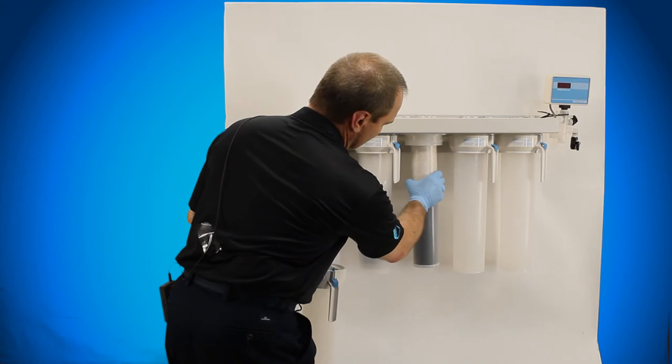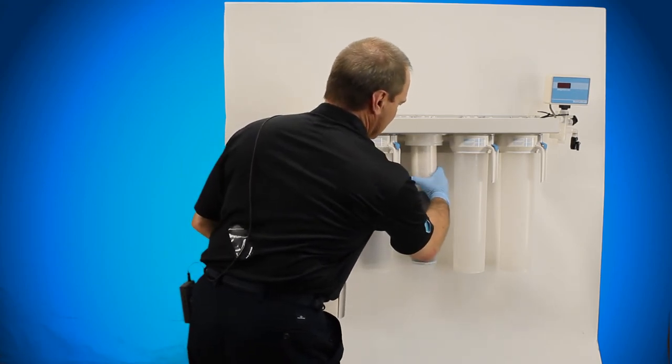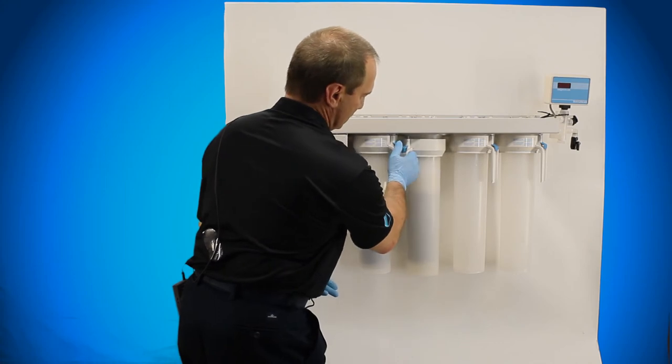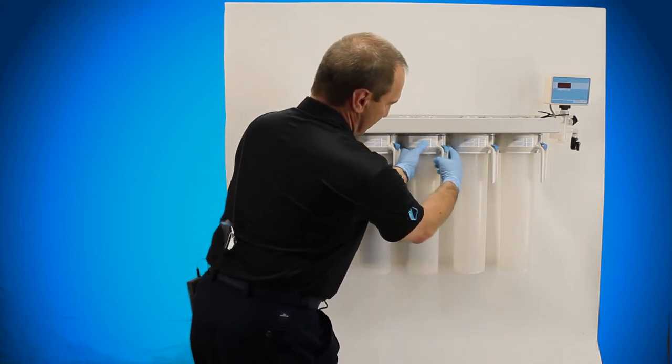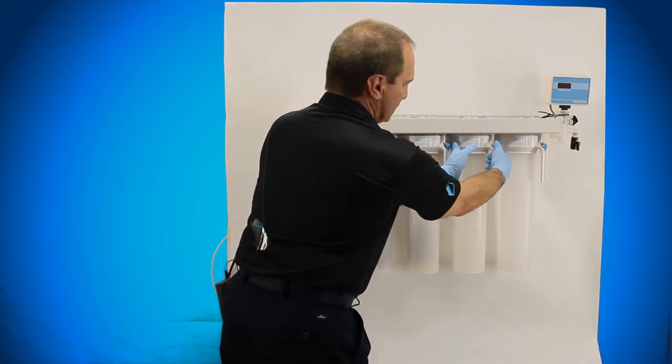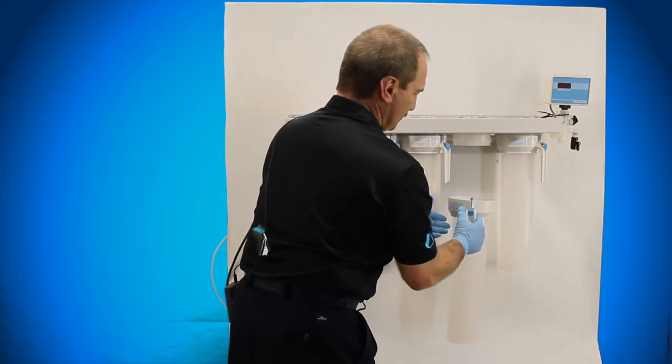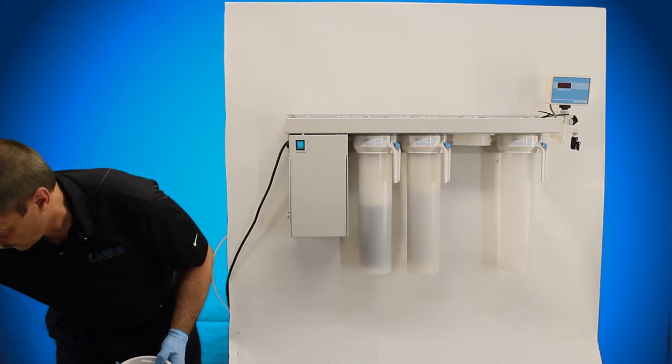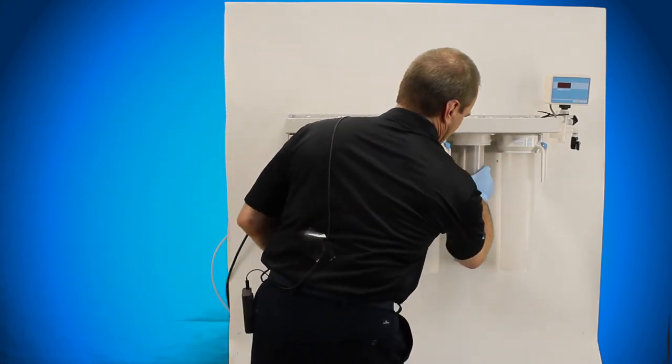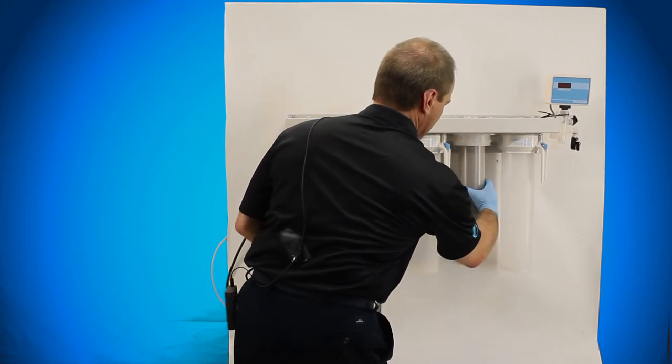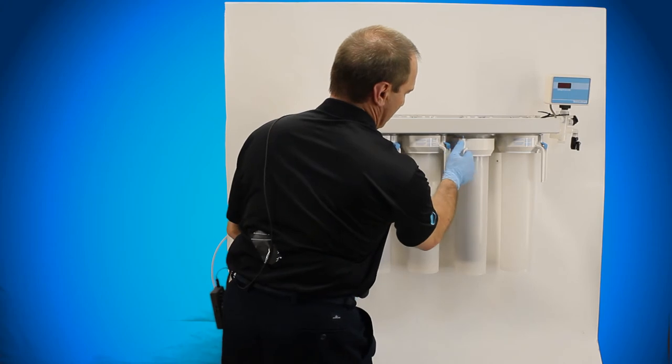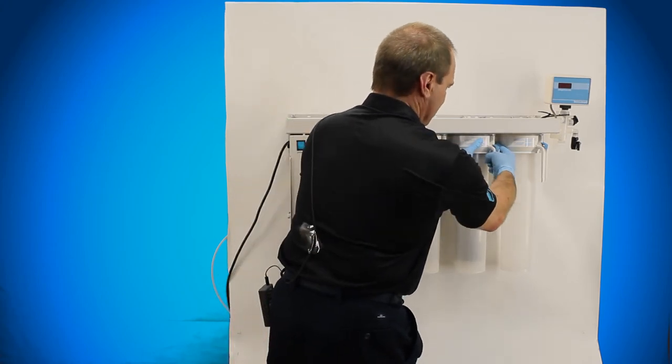So your next cartridge will go up in place, twist it up in place, make sure it locks up there. Take your canister, lock it into place, three clicks, and do that with your third one. Checking to make sure that you have the right cartridge by looking at the stamp on the top. Twist it up into place, quarter turn locking canister, locks in place.